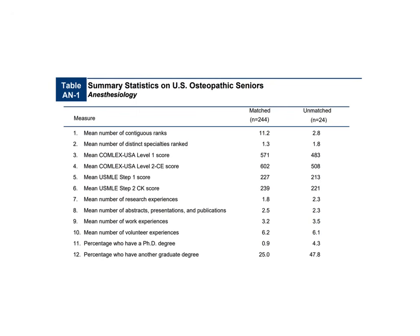For goal setting, your Step 1 goal should be around 230 and your Step 2 goal should be 240. Research experiences were 1.8 for DOs — DO schools generally offer fewer research opportunities than MD schools. Mean abstracts, presentations, and publications: 2.5. Work experiences: 3.2. Volunteer experiences: 6.2. Percentage with a PhD is less than 1%, which makes sense since few DO schools offer a DO-PhD, and those with PhDs tend to gravitate toward MD schools with abundant research. Percentage with another graduate degree: 25% for DOs matching into anesthesiology.